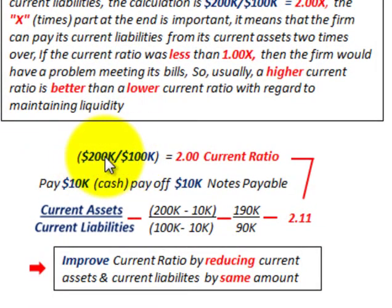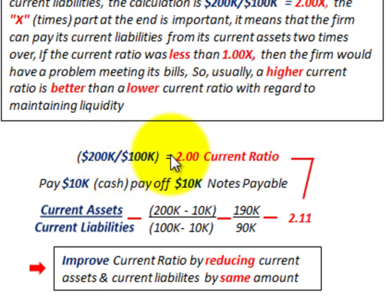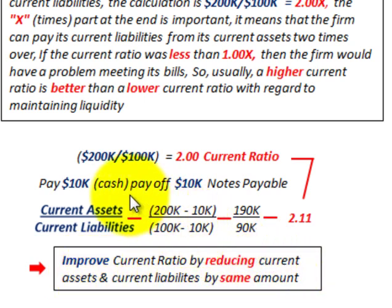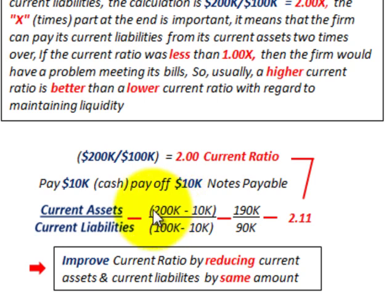Let's look at our calculations and how we can improve this current ratio by reducing both current assets and current liabilities by the same amount. We have $200,000 in current assets and $100,000 in current liabilities, giving a current ratio of 2.00. For example, we're going to pay off $10,000 in notes payable, which is a current liability, using cash — a current asset — of $10,000. So we reduce current assets by $10,000, giving us $190,000.